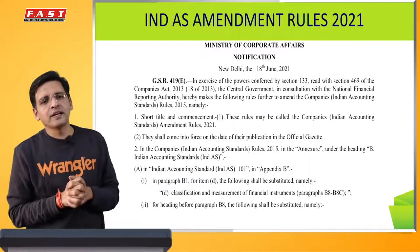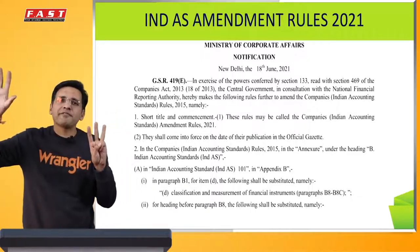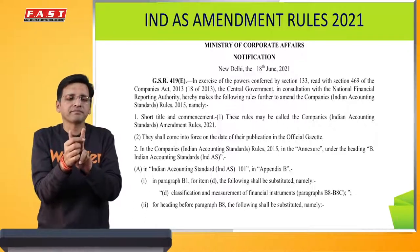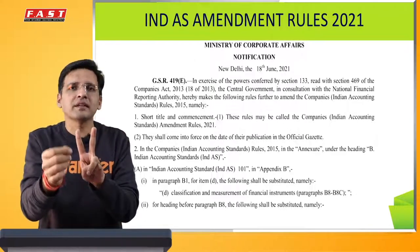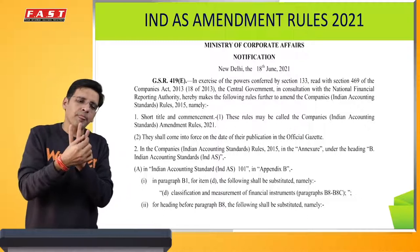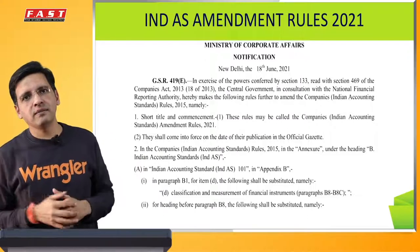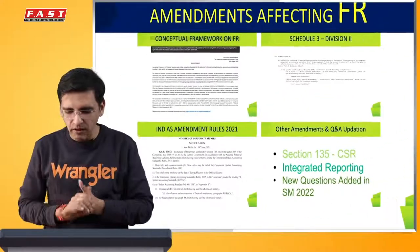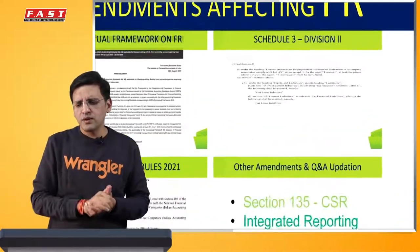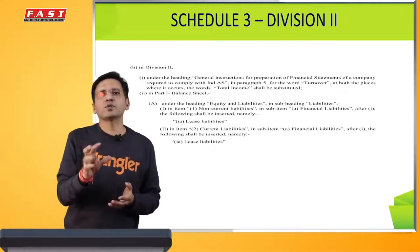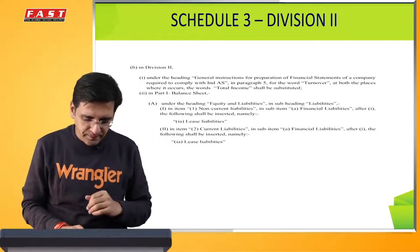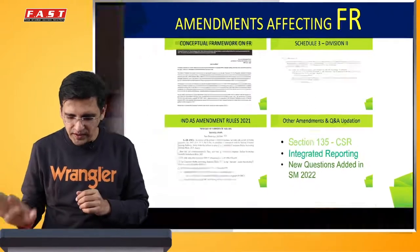So - Ind AS Amendment Rules 2021 mein primarily bahut saare Ind AS affected hain, but primarily there are three amendments. One - Conceptual Framework reference - agar aap iske upar zyada dhyan de rahe ho toh yeh koi major relevance nahi rakhta. Second - 30th June 2021 ki jagah 2022 kar diya gaya hai lease related concessions in the rent ke us provision ko. And finally, interest rate benchmark reforms - change hone ke kaaran financial liability ya lease ke standard mein kuch changes hain which have not been incorporated per se by the institute in the study material. Iske alaawa agar koi bada change hua hai to wo Schedule 3 Division 2 mein bahut saare disclosures add ho gaye hain, SOCIE ke format mein halke phulke changes ho gaye hain. Yeh saare ke saare changes aapke FAST ke study material mein incorporate kiye ja chuke hain.